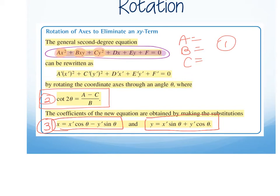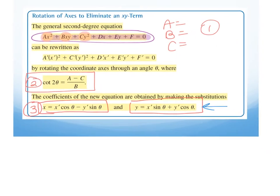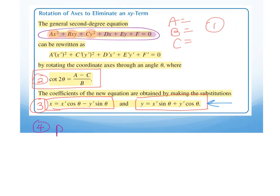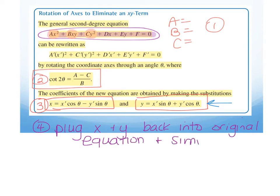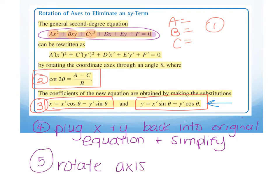With x, cosine comes first; with y, sine comes first. X gets the minus and y gets the plus. Once you have x and y, step four is to plug them back into the original equation, which will give you a conic in standard form. Step five is to rotate your axis and graph the conic — which could be a parabola, ellipse, circle, or hyperbola — on the rotated axis.